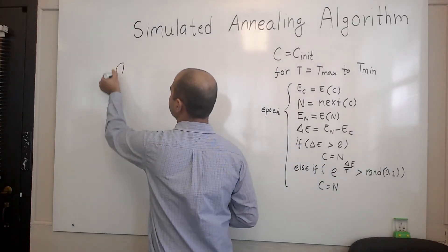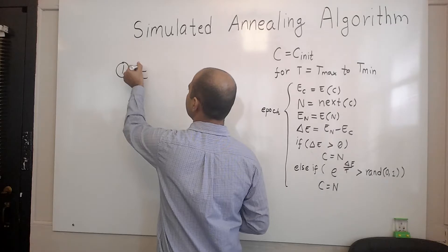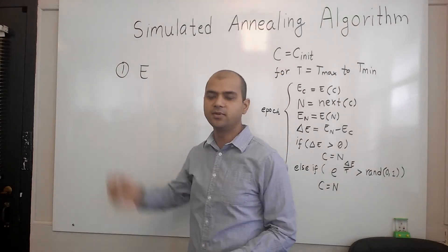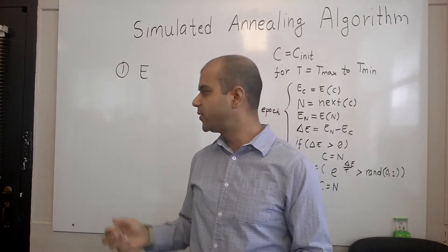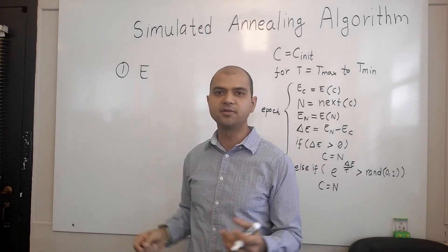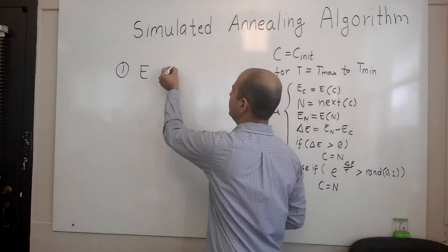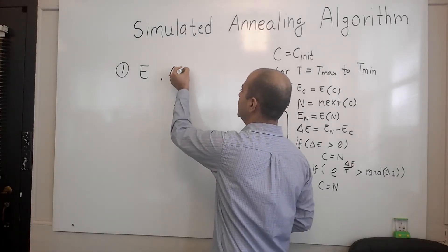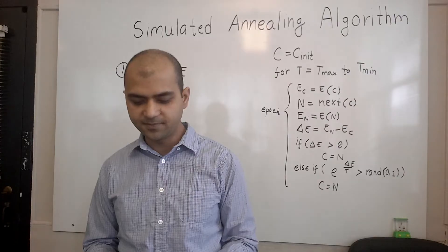If E is the energy of the system, we represent it using E. Once we have a mechanism to compute E, we can also compute delta E, or the change in energy. Every time the system goes through a change of configuration, we can compute the change in energy.